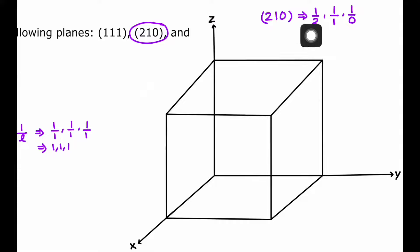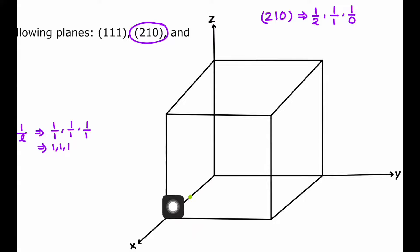Along the X axis, it will be intersecting at 1/2. From the center to the edge is a distance of 1, so 1/2 is just half of that — I will mark the point here at half the edge length. This is the point of intersection at the X axis. On the Y axis it is at 1, so this will be the point of intersection. On the Z axis it is infinity, so it is not intersecting.